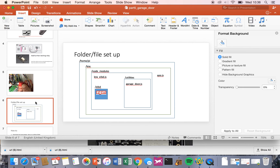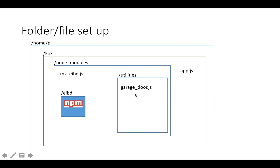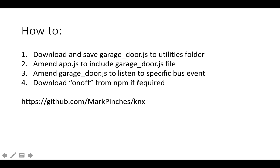You need to download the garage door .js file, which is on the GitHub, and drop it into the utilities folder. You will need to make some changes to that — you'll need to put in your own KNX bus address, i.e. the one that's listened for which will initiate the GPIO pins. You will also need to amend app.js to include garage door.js so it's loaded in when app.js is run. You might also need to download the on-off library from NPM, because garage door.js leverages that.